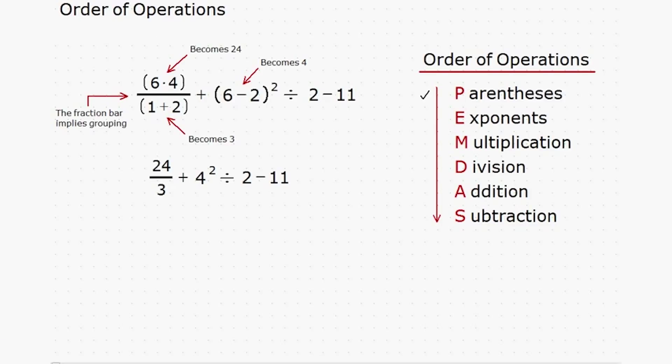So what's the next item? Exponents. Are there any exponents in the expression? Yes, there is an exponent on the 4, so I'll rewrite that as a 16, move the expression down one line, and check exponents off the list.